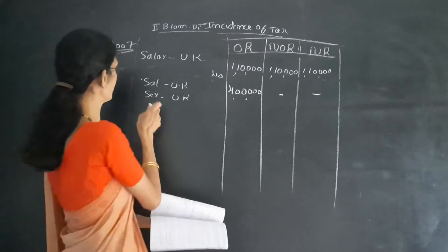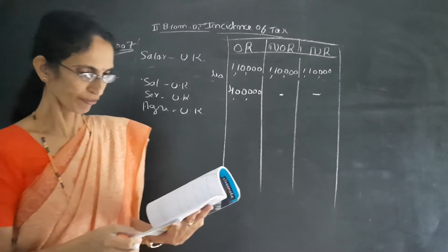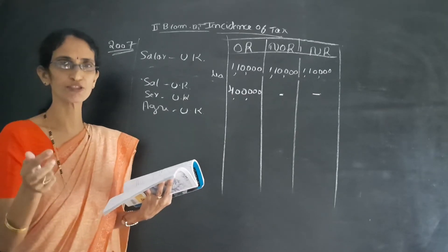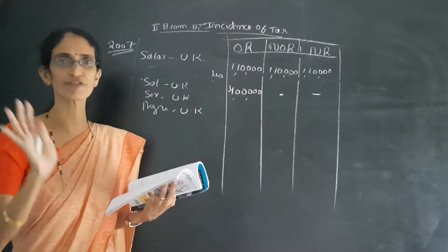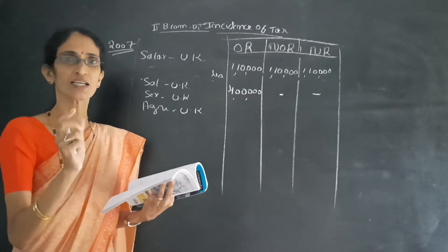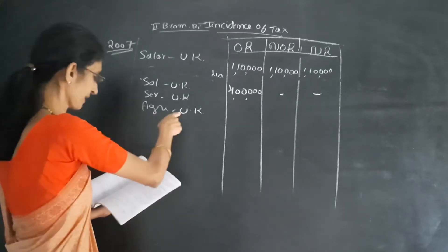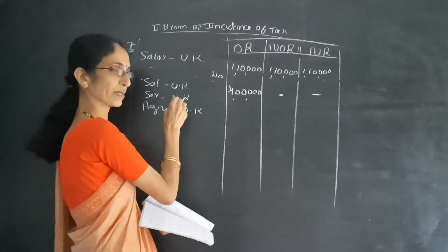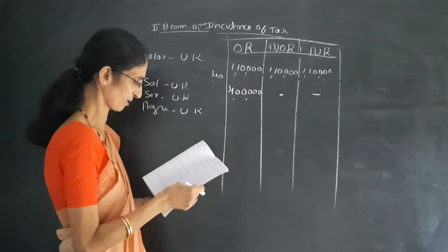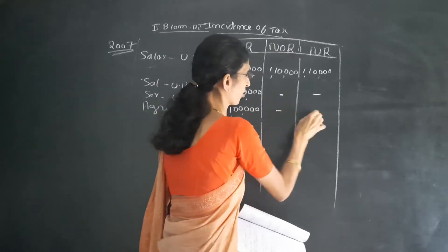Next, agricultural income in UK — 50% is remitted to India. I already told you: brought to India, remitted to India, deposited in India — there is no difference in those phrases, just leave it. Agricultural income in a foreign country: the first column is taxable, so write 1 lakh in the first column, then dash, dash in the other two columns.